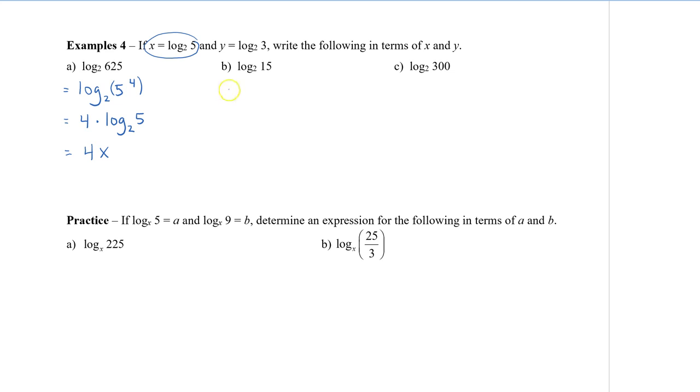In the second one, what we can do is rewrite the 15 as log base 2 of 5 times 3. And then using our product rule, we know that when we multiply, we're going to add our exponents. So this will be log 5 plus log 3, both with a base of 2. And now we can substitute these two logs with the corresponding x and y value.